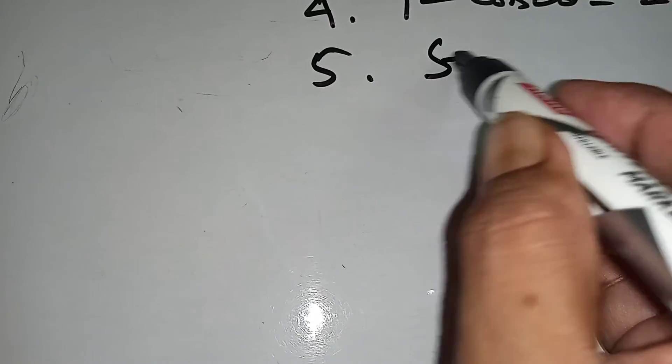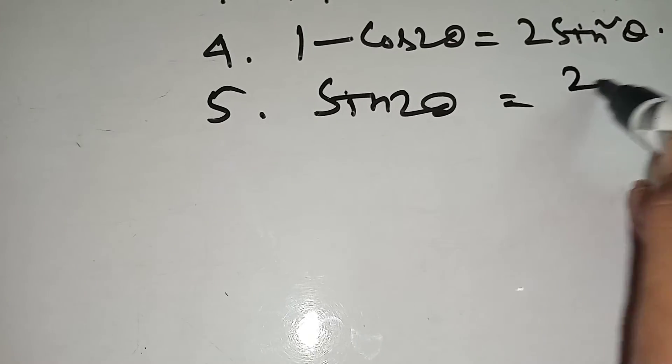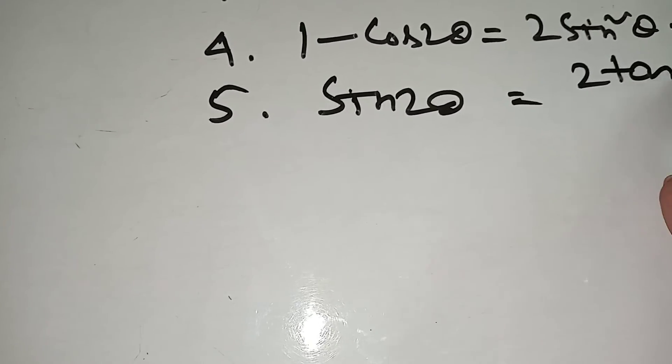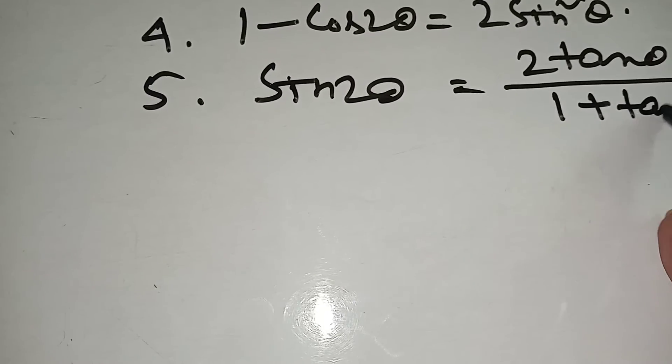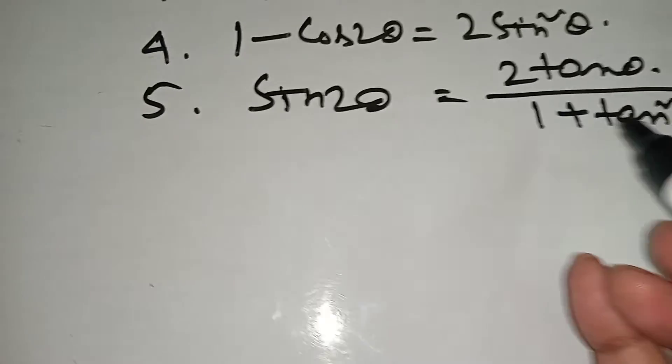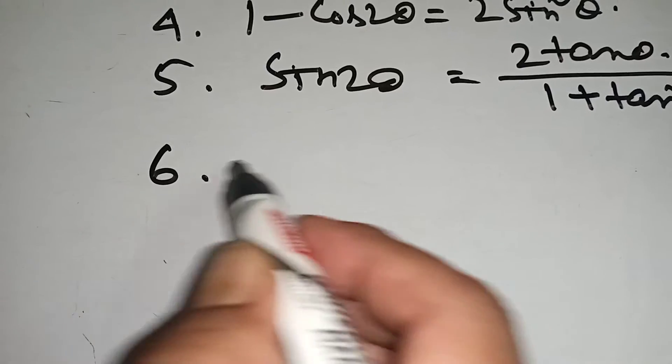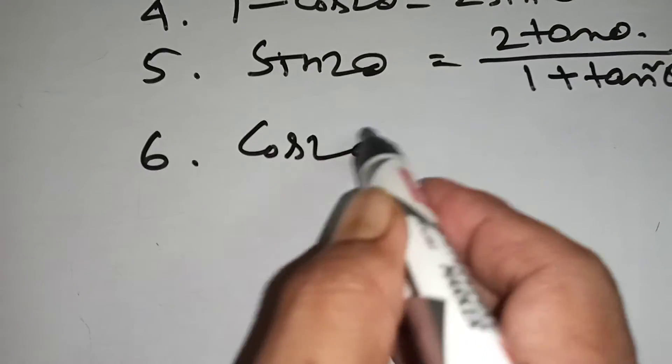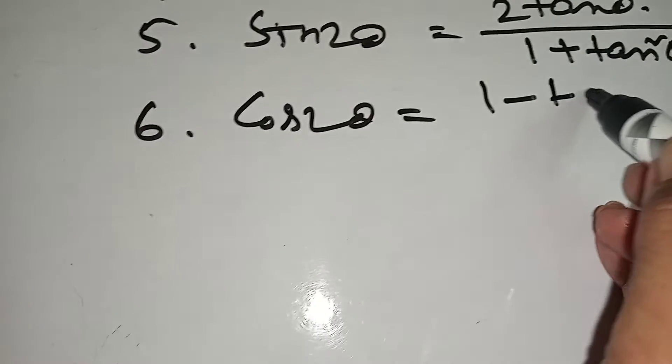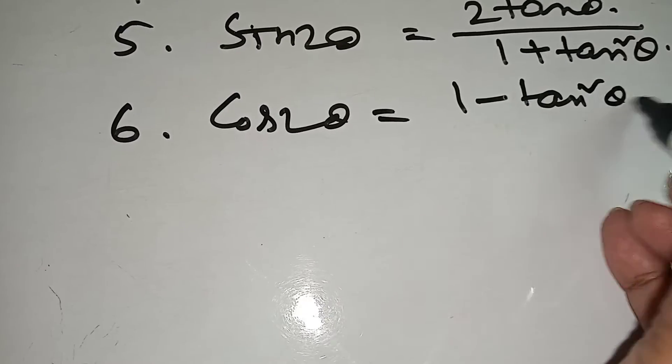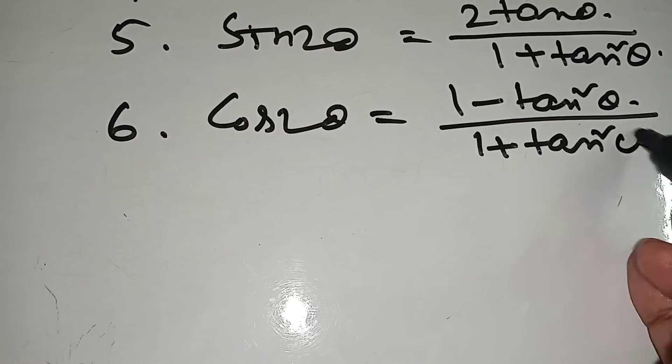Number 5: sin 2 theta equal to 2 tan theta by 1 plus tan square theta. This is done in terms of tan theta. Number 6: cos 2 theta equal to 1 minus tan square theta by 1 plus tan square theta.